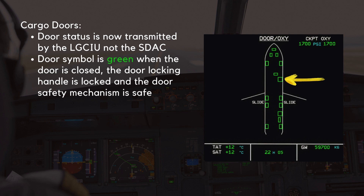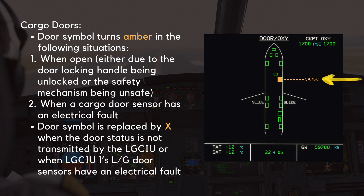The door symbol outline is green when the door is closed, the door locking handle is locked, and the door safety mechanism is safe. The door symbol turns amber when it is open — either due to the door locking handle being unlocked, the safety mechanism being unsafe, or when a cargo door sensor has an electrical fault. The door symbol is replaced by one amber cross when the door status is not transmitted by the LG-CIU, or when LG-CIU-1's landing gear door sensors have an electrical fault.